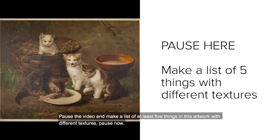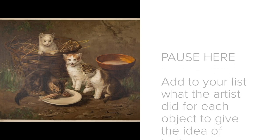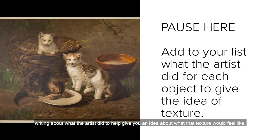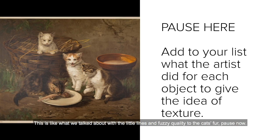Pause the video and make a list of at least five things in this artwork with different textures. Pause now. Now that you have your list of objects and textures, get ready to pause again and go back over each one writing about what the artist did to help give you an idea about what that texture would feel like. This is like what we talked about with the little lines and fuzzy quality to the cat's fur. Pause now.